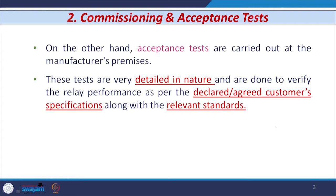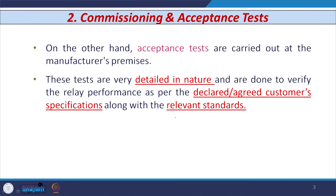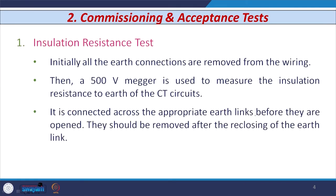The acceptance tests are carried out at the manufacturer premises, whereas the commissioning test is to be performed at the customer premises. These tests are detailed in nature and have to be done at the customer's premises, carried out as per the agreed or declared specification mentioned in the purchase order by the customer, and based on certain IEEE or IEC standards.